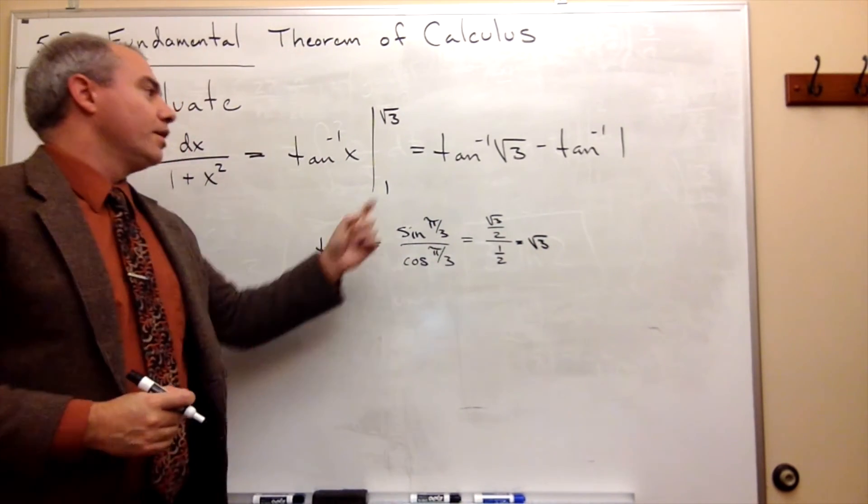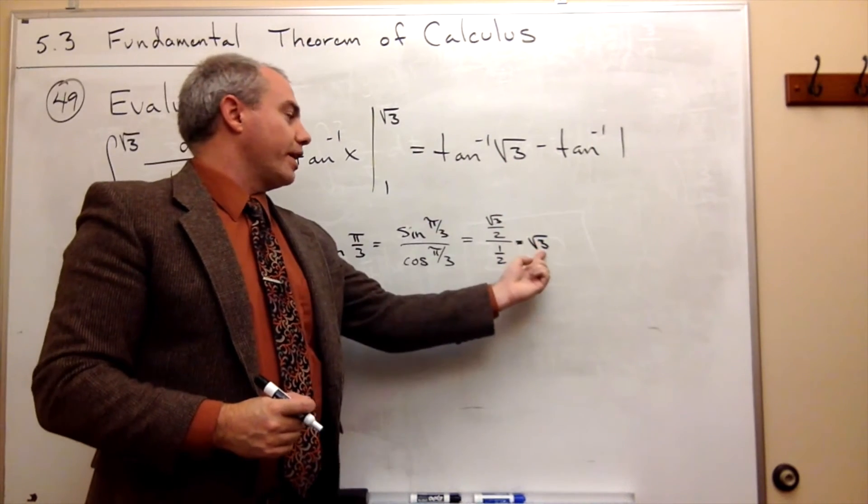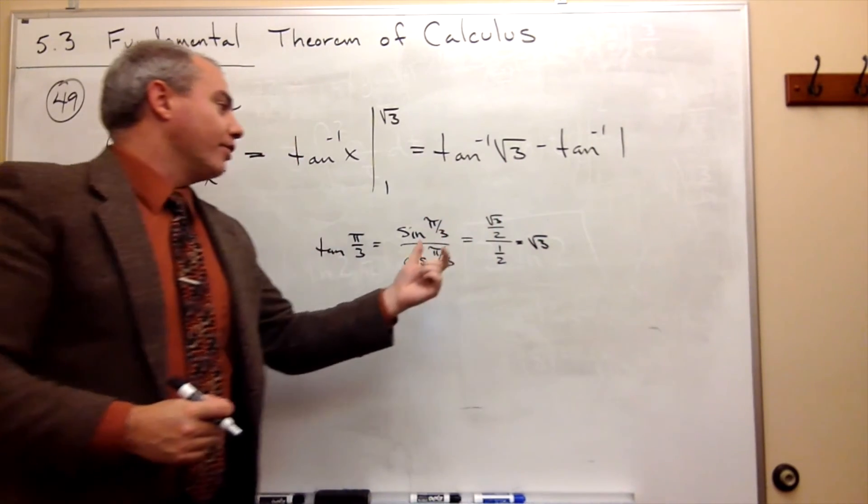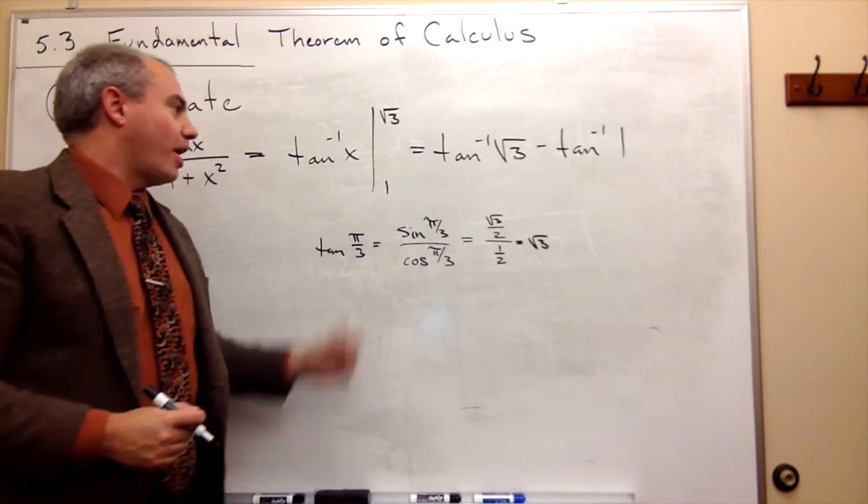So what we're really looking for, tan inverse of root 3, what angle's tangent is root 3? It's pi over 3.